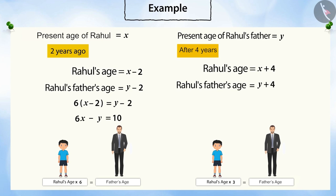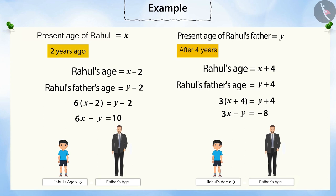Now, can you make a linear equation of two variables from this? Three multiplied by (X plus four) equals Y plus four. That is, three X plus twelve equals Y plus four. Moving Y to the left: three X minus Y equals four minus twelve, which gives three X minus Y equals negative eight. This is a linear equation.